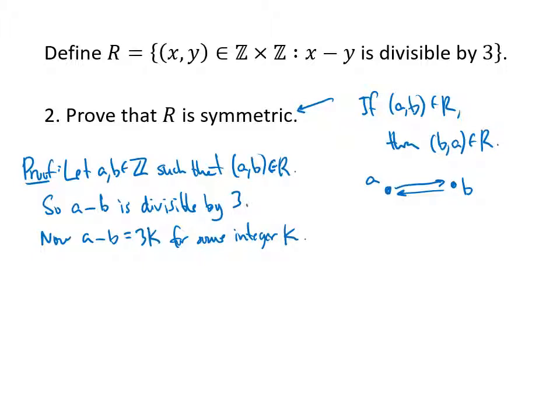So now what are we shooting for? We're shooting for b minus a to be in R. So in other words, what we want is for b minus a to be divisible by 3. That will tell us that (b,a) is in my relation R. So how are b minus a and a minus b related? Well, a little bit of algebra would tell you that b minus a is actually the negative of a minus b. Because if I distribute my negative and rearrange a little bit, that works out.